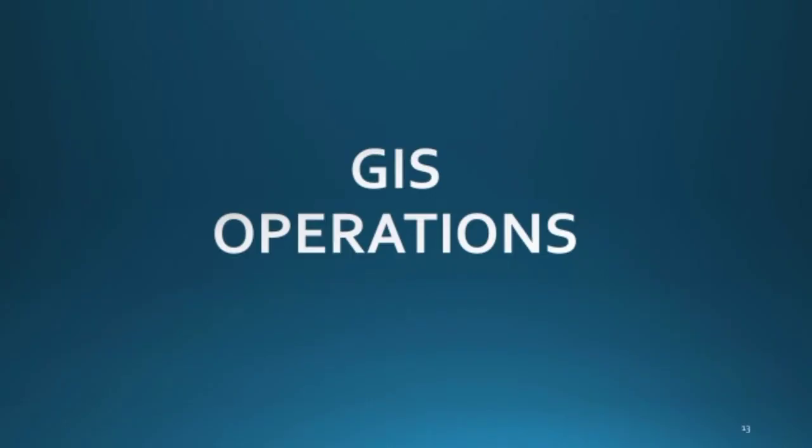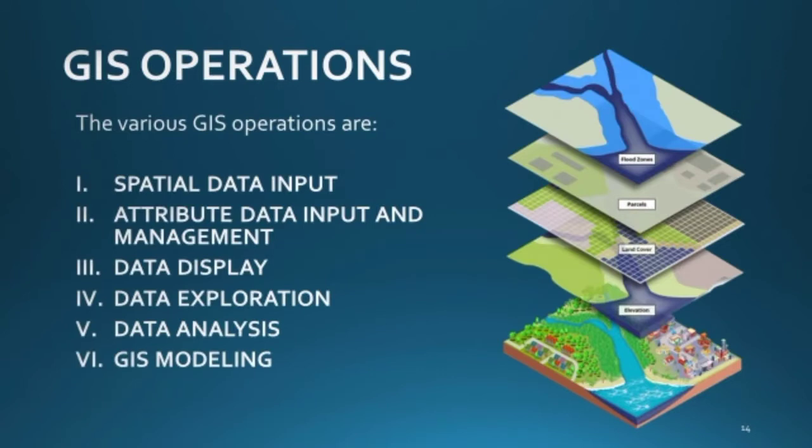That was an introduction to GIS and its components and data representation. Next, we move on to GIS operations — how can we make a GIS map of an area and how can we add details to it? This is the order of GIS operations.